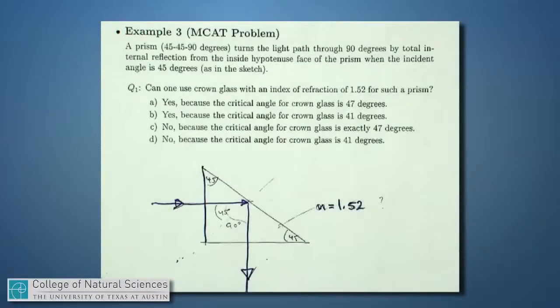Here's another example problem, straight off of a past MCAT. It reads that a prism, which is a 45-45-90 degree prism, so it's a triangular wedge shaped piece of glass or some material, is being used to turn the light path through 90 degrees, so bending like that, using the process of total internal reflection from the inside surface.